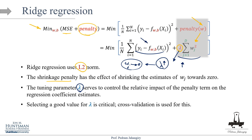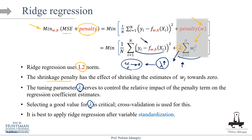As you increase lambda, the algorithm forces those wⱼ's towards zero. We'll discuss later why ridge regression cannot make weights exactly equal to zero, so it can't be used for feature selection. The tuning parameter lambda controls the relative impact of the penalty on regression coefficient estimates. Selecting a good value for lambda is critical — we'll use cross-validation to optimize it. Lambda is a hyper parameter that is pre-specified, and we use the training set to train the model. It's best to apply ridge regression after variable standardization.